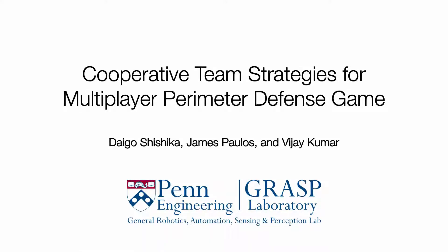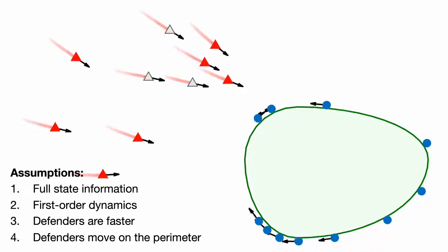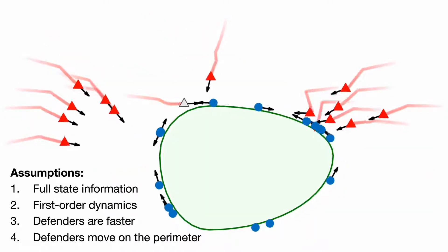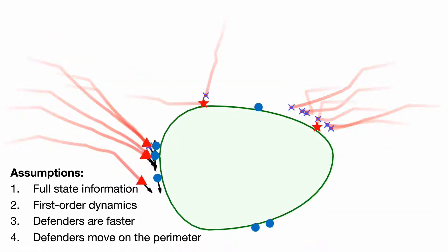We study a team coordination problem in the context of perimeter defense. Consider a team of intruders trying to score by reaching a perimeter. A team of defenders is tasked to minimize the score by intercepting them.